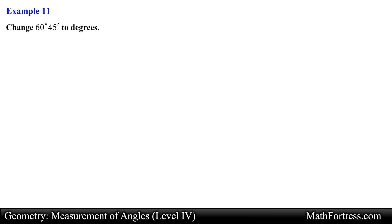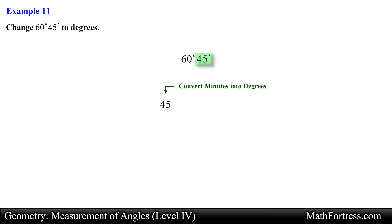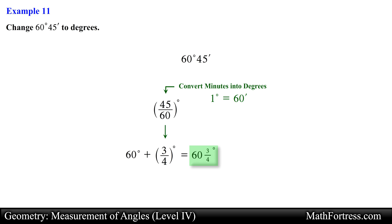Change 60 degrees 45 minutes to degrees. We are asked to convert an angle measurement in degrees and minutes to degrees. We need to change 45 minutes to a fractional part of a degree and add it to 60 degrees. Since 60 minutes equals 1 degree, we take 45 and divide it by 60 and reduce the fraction. So 60 degrees 45 minutes can be written as 60 and three quarters degrees, or alternatively as 60.75 degrees. This is our final answer.